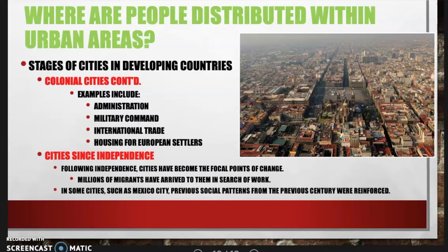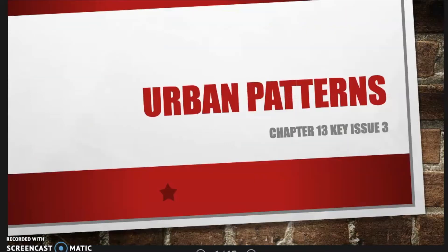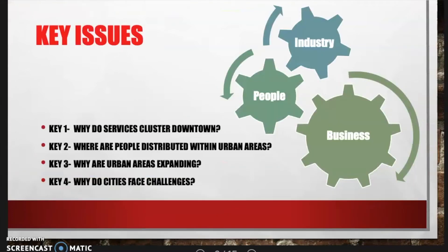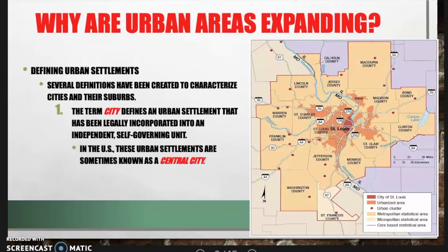That brings us to the end of our brief discussion on urban patterns with three different models. Now let's start key issue three: why are urban areas expanding? We spent time talking about why services cluster downtown and the three models of urban distribution. Now there are several definitions created to characterize cities and their suburbs. First, the term city defines an urban settlement that has been legally incorporated into an independent self-governing unit.